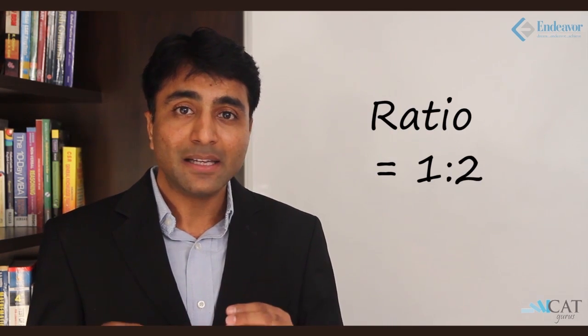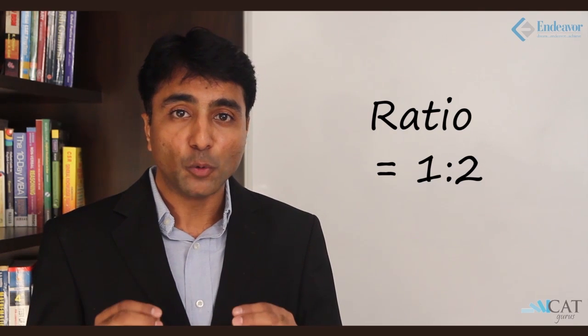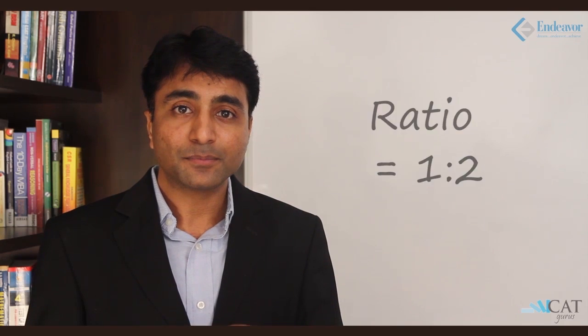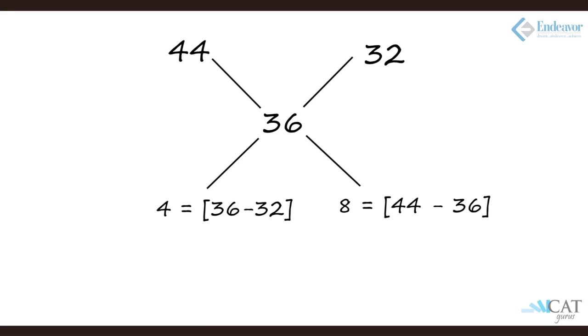If I mix them in the ratio 1 is to 2, I will get my average price as 36. Using the allegation graph: 44 minus 36 gives 8, and 36 minus 32 gives 4. So the ratio is 8 is to 4, which is 2 is to 1. Here 4 corresponds to 44 (basmati) and 8 corresponds to 32 (ordinary), hence the final ratio is 1 is to 2.